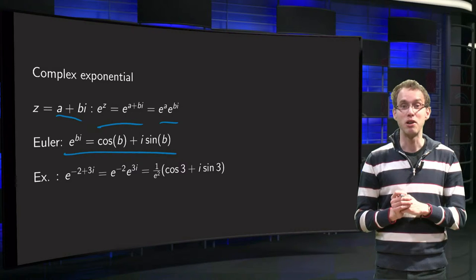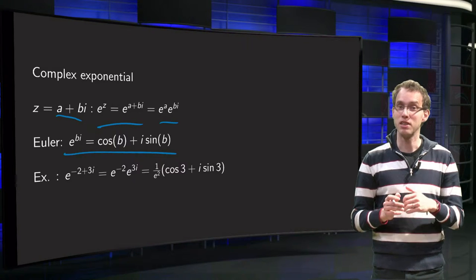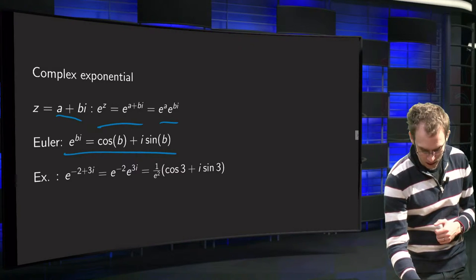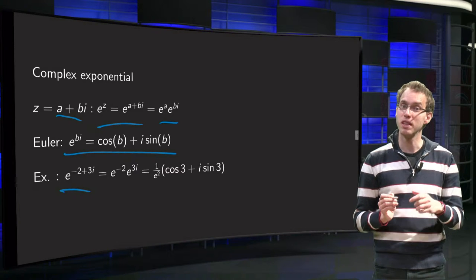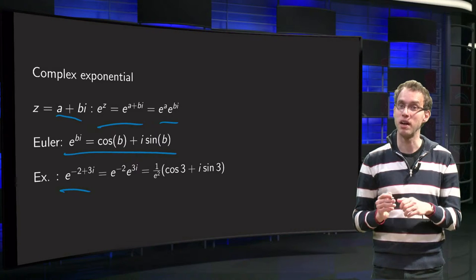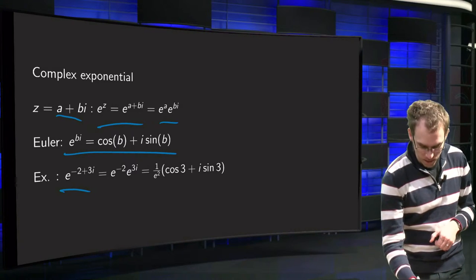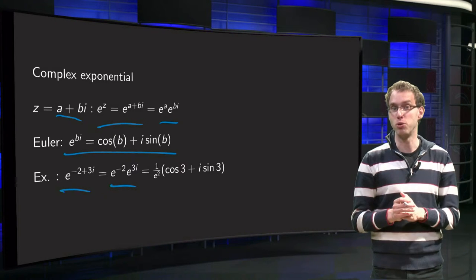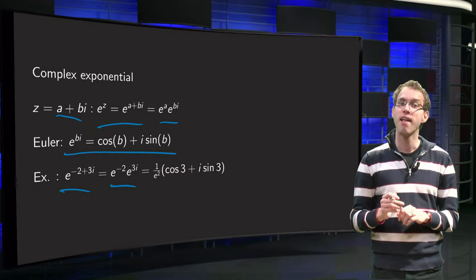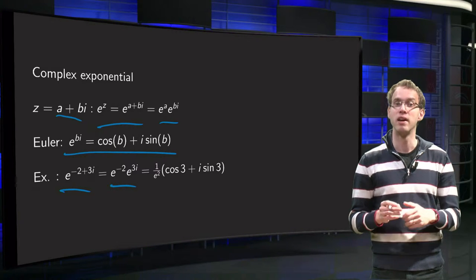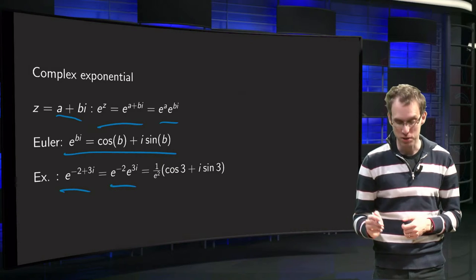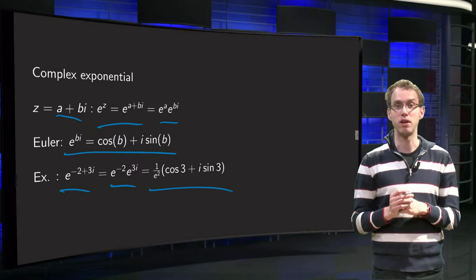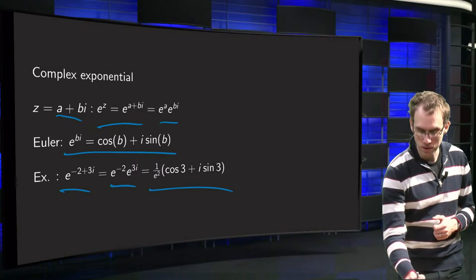So now we know how to compute e to the power z. Let's do an example. If z equals minus 2 plus 3i, then e to the power (−2 + 3i) splits into two parts: e to the power minus 2 times e to the power 3i. The first part is just a real number, and for e to the power 3i we use Euler's formula: that equals cosine 3 plus i times sine 3. So that is how you compute the exponential of a complex number.